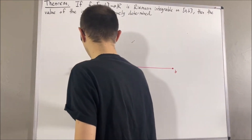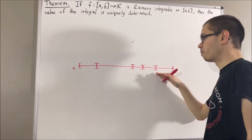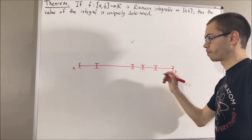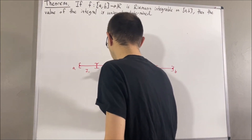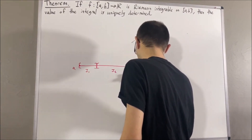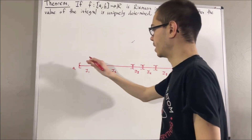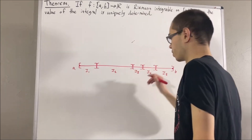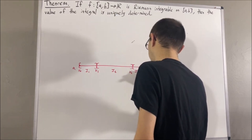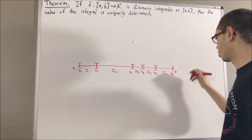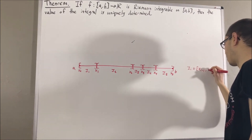For example, this collection of closed intervals would be a partition of [a, b]. We might label these intervals i1, i2, i3, i4, and i5, and label the endpoints x0, x1, x2, and so on. In general, the subinterval i_i is equal to [x_{i-1}, x_i].